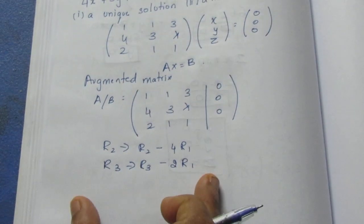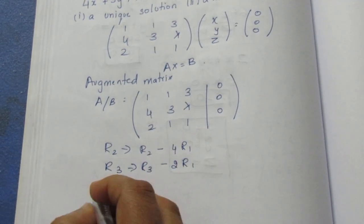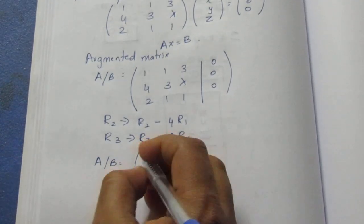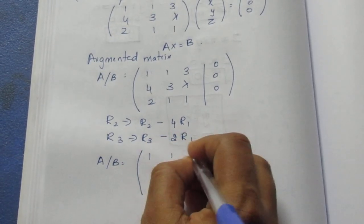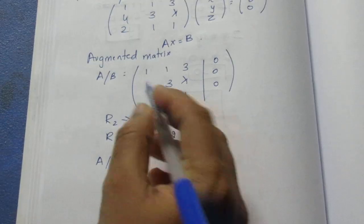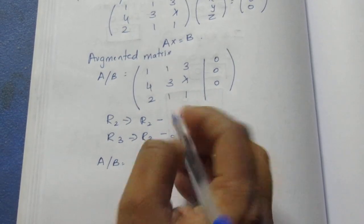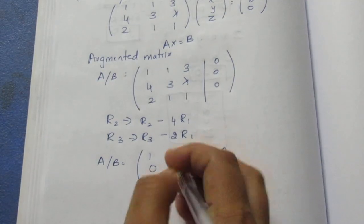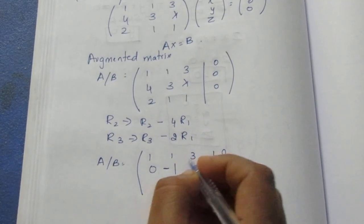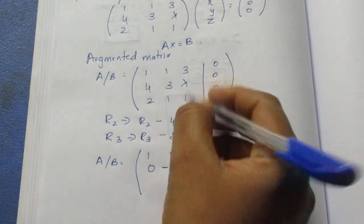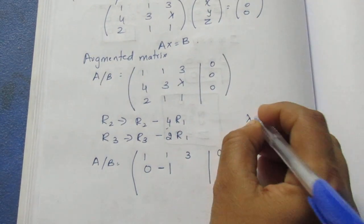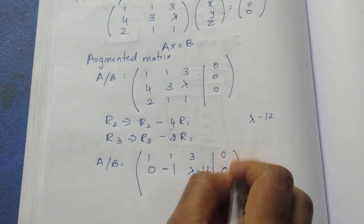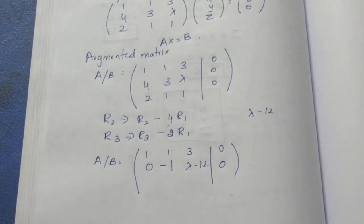A slash B after row 2 operation: the first entry is 0. Then 3 minus 4 gives minus 1. Lambda minus 4 times 3 is 12, so lambda minus 12. The last column gives 0 minus 0 equals 0.